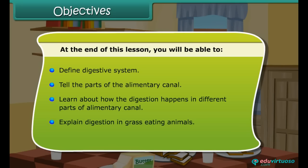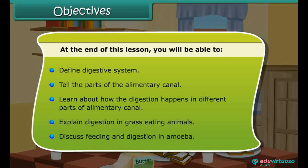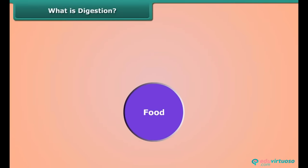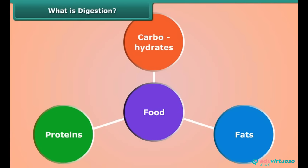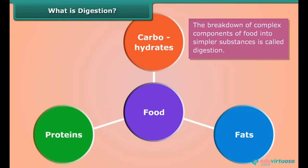You will also explain digestion in grass-eating animals and discuss feeding and digestion in amoeba. We all know food is made up of complex substances like carbohydrates, fats, and proteins. We cannot utilize these substances as such, so they are broken down into simpler substances. The breakdown of complex components of food into simpler substances is called digestion.